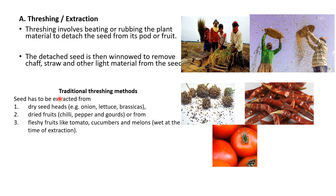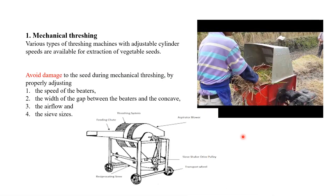The broad objective of threshing is the removal of seed or fruit from the plant material, followed by removal of seed from the attached chaff, straw, or other light plant debris. In traditional threshing methods, it can be applied to both dry seeds — such as dry seed heads of onion and dry fruit of chilies — and also to fleshy fruits like tomato.